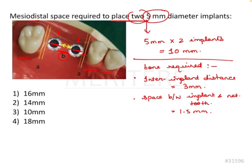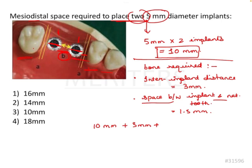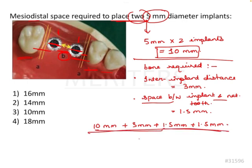In this clinical scenario we have two implants. So we have one inter-implant distance. Adding everything up: 10mm for the implants, plus 3mm between the two implants, plus 1.5mm between the first premolar and second premolar, and 1.5mm between the first molar and second molar. That gives a total of 10 + 3 + 3 = 16mm.